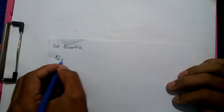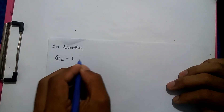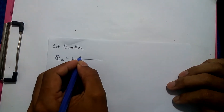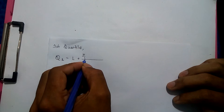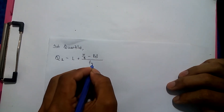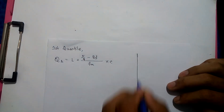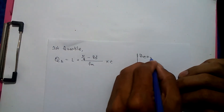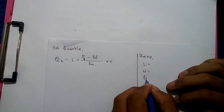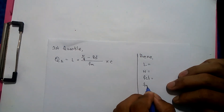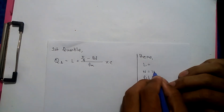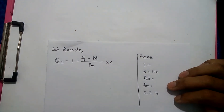The first quartile is shortened as Q1. The formula for Q1 is: L plus n by 4 minus PCF, divided by FM, into c. Everything is the same formula — just n by 4 instead of n by 2. The values are: c equals 5, n equals 100. Let me assign the values: L, n, PCF, FM, and c.